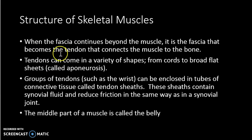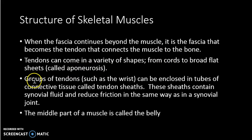Continuing with the structure of skeletal muscles: the fascia works beyond the muscle and becomes the tendons. Tendons come in a variety of shapes depending on their location — they can be straight cords similar to ropes, or broad flat sheets called aponeuroses. Groups of tendons, such as those in the wrist, may be enclosed in connective tissue called tendon sheaths. These sheaths contain synovial fluid, which prevents friction between tendons that lie close to each other, allowing them to move across one another much more easily.